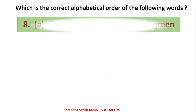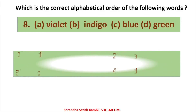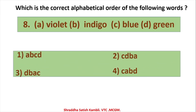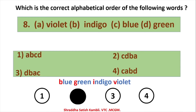Next example: VIOLET, INDIGO, BLUE, GREEN — colors of the rainbow. All start with different letters: B, G, I, V. Blue comes first, then Green, then Indigo, then Violet. The correct alphabetical order is BLUE, GREEN, INDIGO, VIOLET — option CDBA.